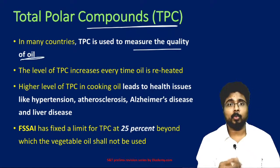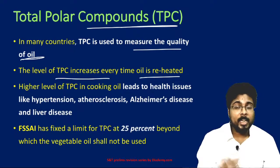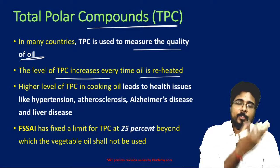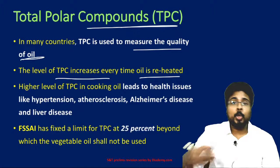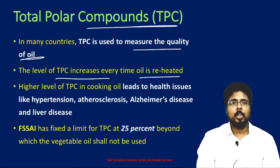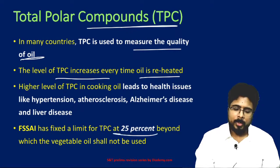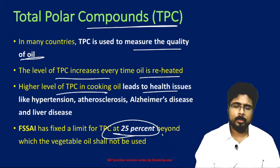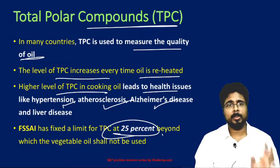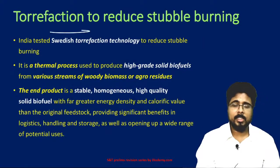Next, total polar compounds (TPC). TPC is used to measure the quality of oil. If an oil is reused, the TPC value will increase — TPC value increases every time oil is reheated. Reheating oil is not good for human health. Fast food centers and many food joints reuse oil, making the food harmful for human beings. The FSSAI has fixed that TPC should not be beyond 25% in foods. Higher levels of TPC can cause hypertension, atherosclerosis, Alzheimer's disease, and liver diseases.